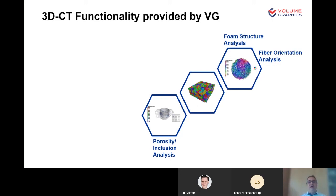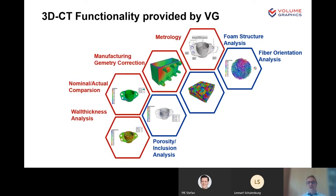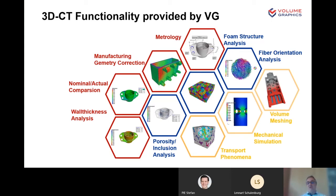Let's look at the 3D analysis functionality provided by Volume Graphics software. First, you have all the material analysis, such as porosity and inclusion analysis, foam structure analysis, and fiber orientation analysis. On top, the metrology-related modules, like coordinate measurement analysis, manufacturing geometry correction, nominal-actual comparison, and wall thickness analysis. You can also perform simulations directly on the voxels, like transport phenomena and mechanical stress simulation, and provide volume meshing as an interface to FEM analysis or simulation modules. Last but not least: reconstruction.